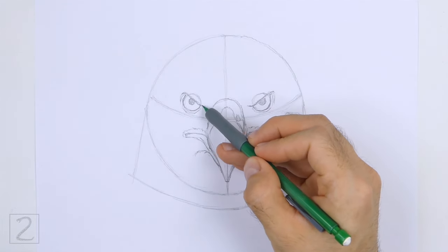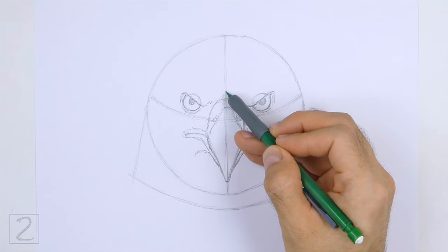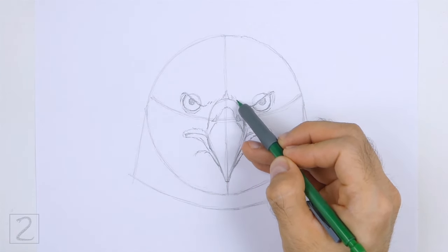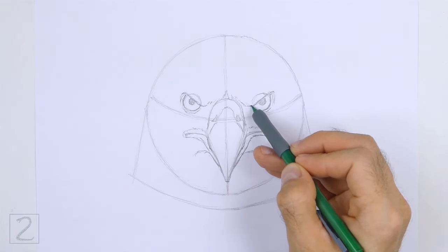Add a few short strokes on top of the beak to emphasize the furrowed brow. Connect these strokes to the tops of the eyes.